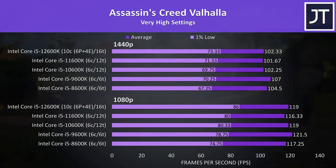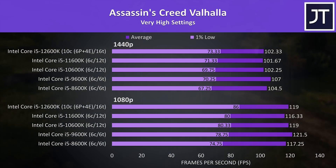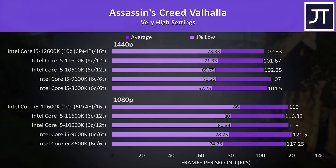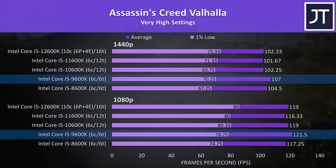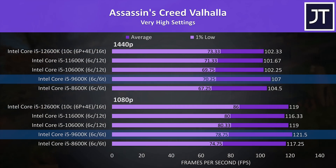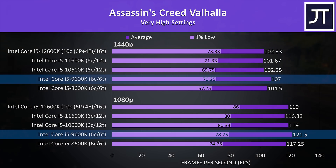Assassin's Creed Valhalla was tested with the game's benchmark and the results were all over the place. The 1% lows consistently improve with newer processors, but the average frame rates don't make a lot of sense. The 9th gen 9600K was actually giving the highest average FPS — something also noted when testing 5 generations of i7 processors — suggesting that fewer threads or something specific about 9th gen boosts average FPS in this test.